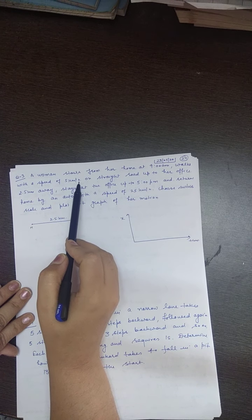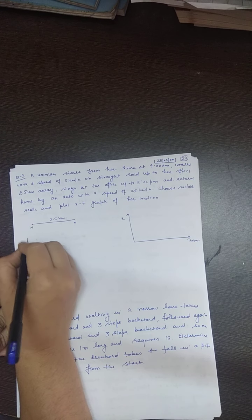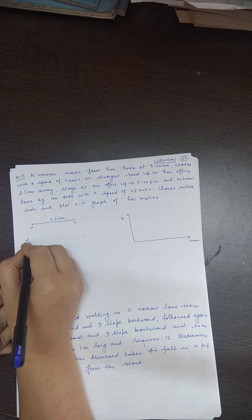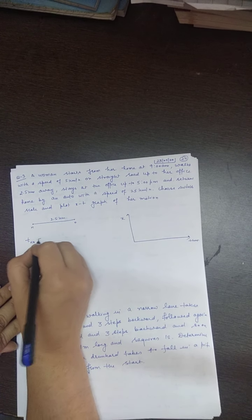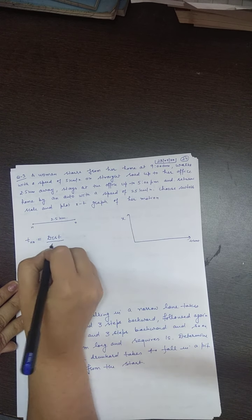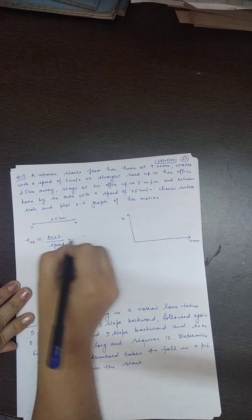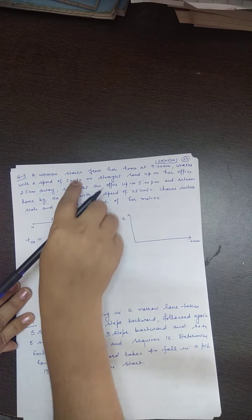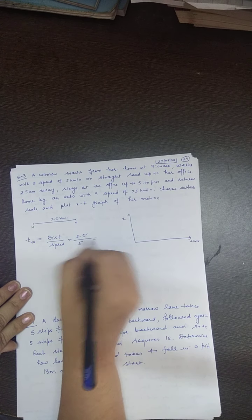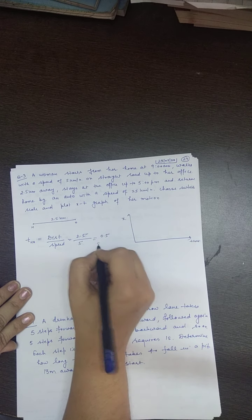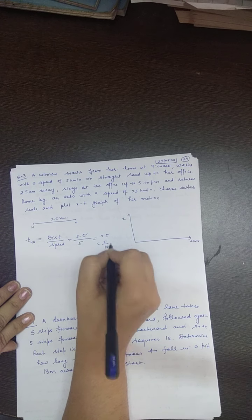What is the time taken by the lady to move from home to office? With how much speed is the lady going? With the speed of 5 km per hour. So time taken is distance divided by speed. The distance is 2.5 km, speed is 5 km per hour, so it is 0.5, which equals half hour, that is 30 minutes.